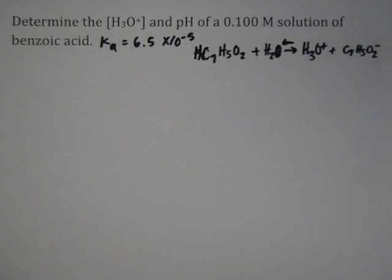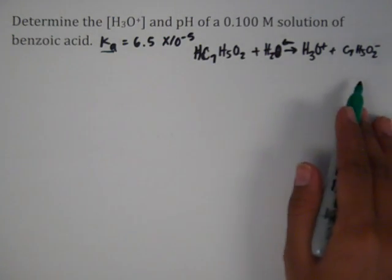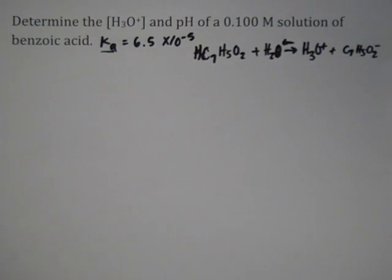Remember, weak acid, any weak kind of problem, we're going to need an ICE table or the shortcut formula, and we have to use our Ka value given right here. Here's the general equation for the benzoic acid dissociation.